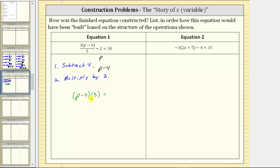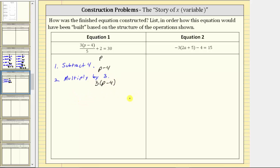But we can apply the commutative property of multiplication and change the order, writing this as three times the quantity p minus four, where the parentheses around the three are optional. This gives us the expression three times the quantity p minus four. Now we have a fraction bar, which means division, so the next step is to divide this product by five. Step three is divide by five, giving us the expression three times the quantity p minus four divided by five.